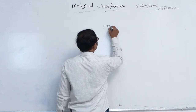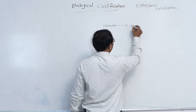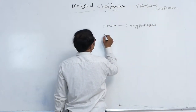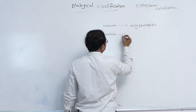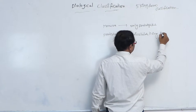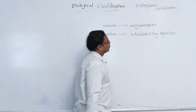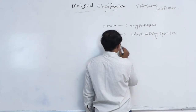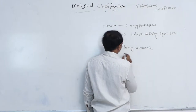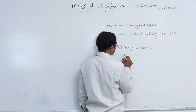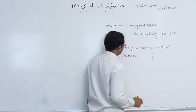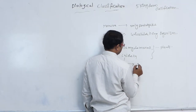In Monera, he included only prokaryotes. In Protista, unicellular living organisms are present. For example, chlamydomonas and chlorella — before this classification, they belonged to plants, but now both belong to Protista. They are really like other plants, but they are placed in Protista.